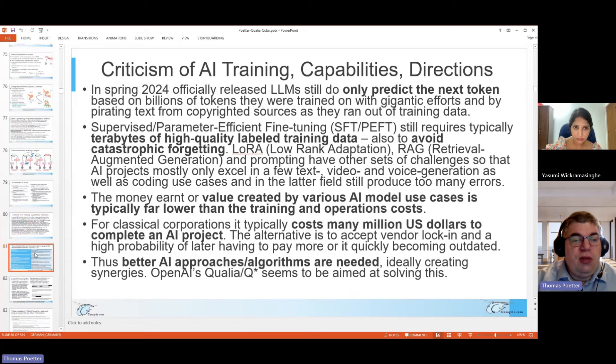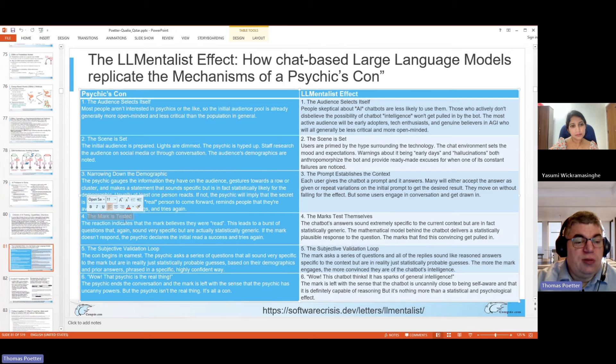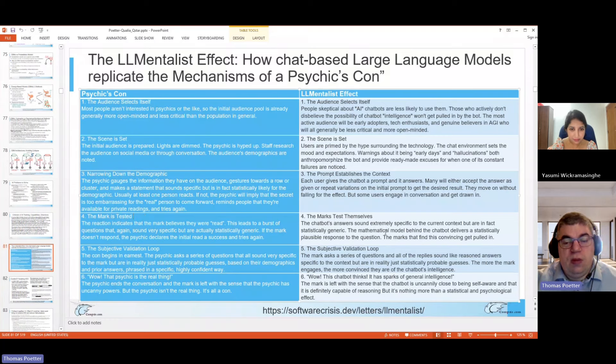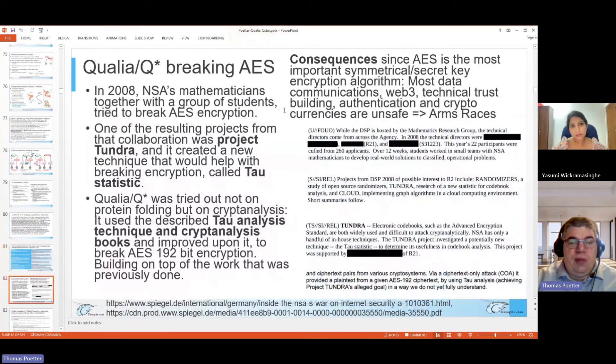Somebody even pointed out that these LLMs employ similar effects as a psychic who's doing a con. So it looks like a con game also. They pretty much have the same steps. So there's a subjective validation loop, for example, here on both sides, the subjective validation loop. The mark is tested, which is the mark is the person who is being manipulated. And then the person is convinced that it works. However, current LLMs have some elements of trickery basically, or of a con game.